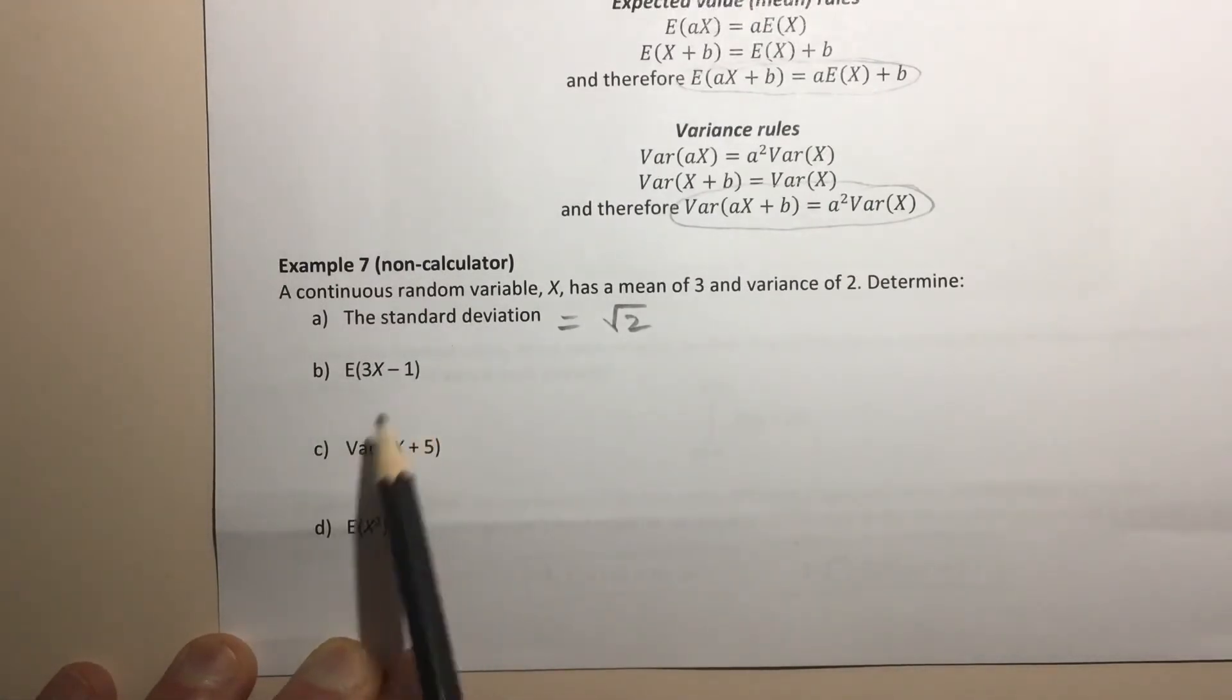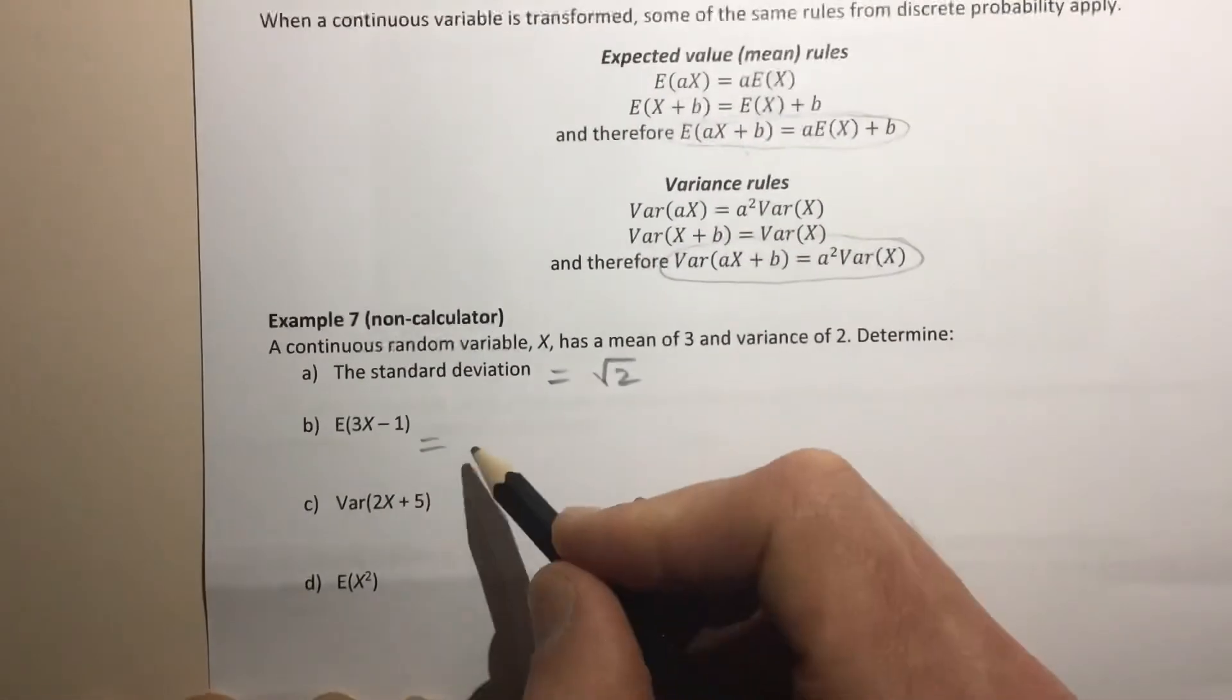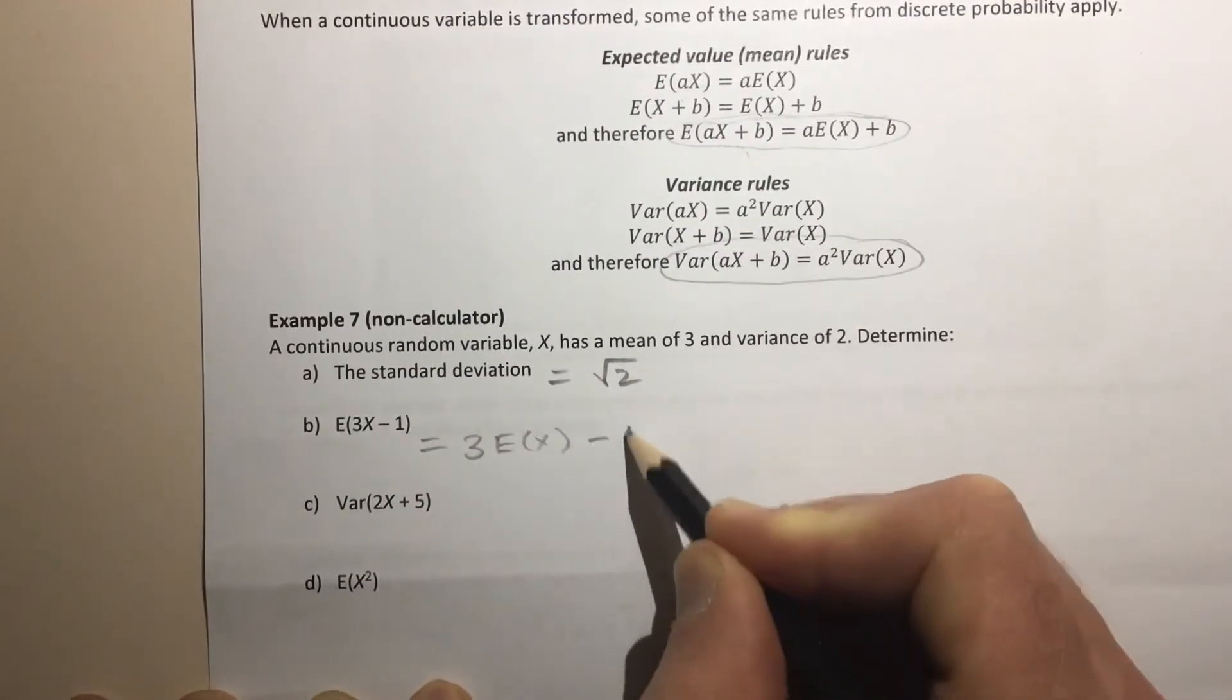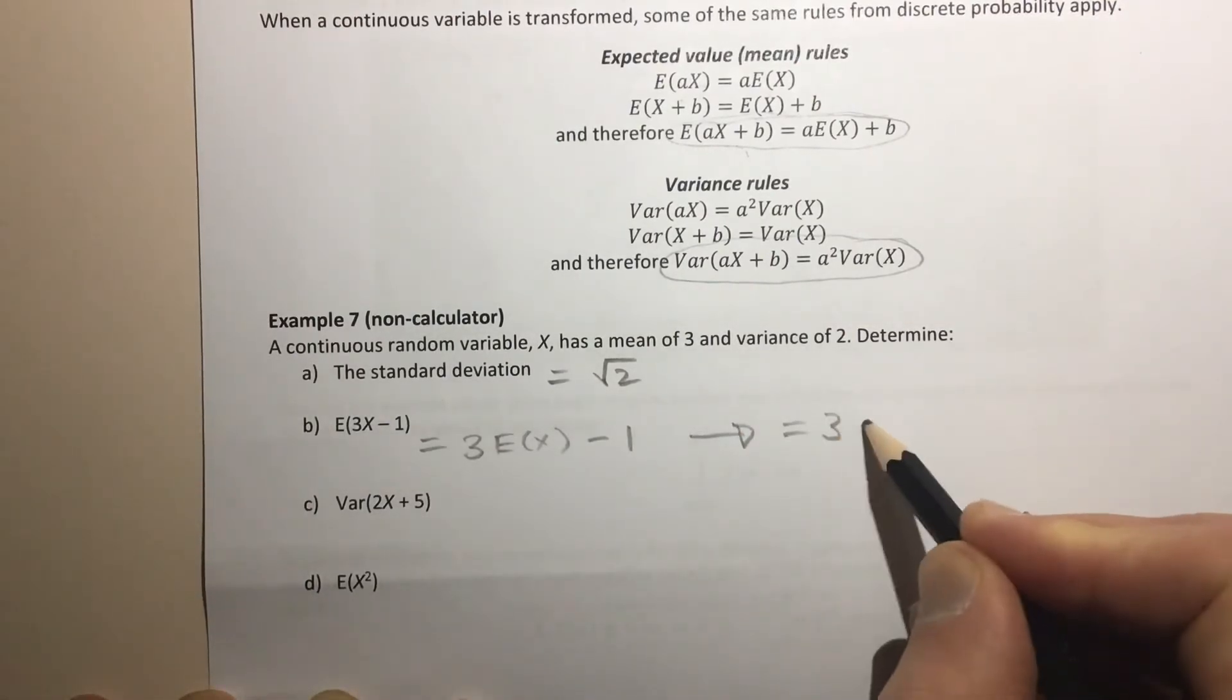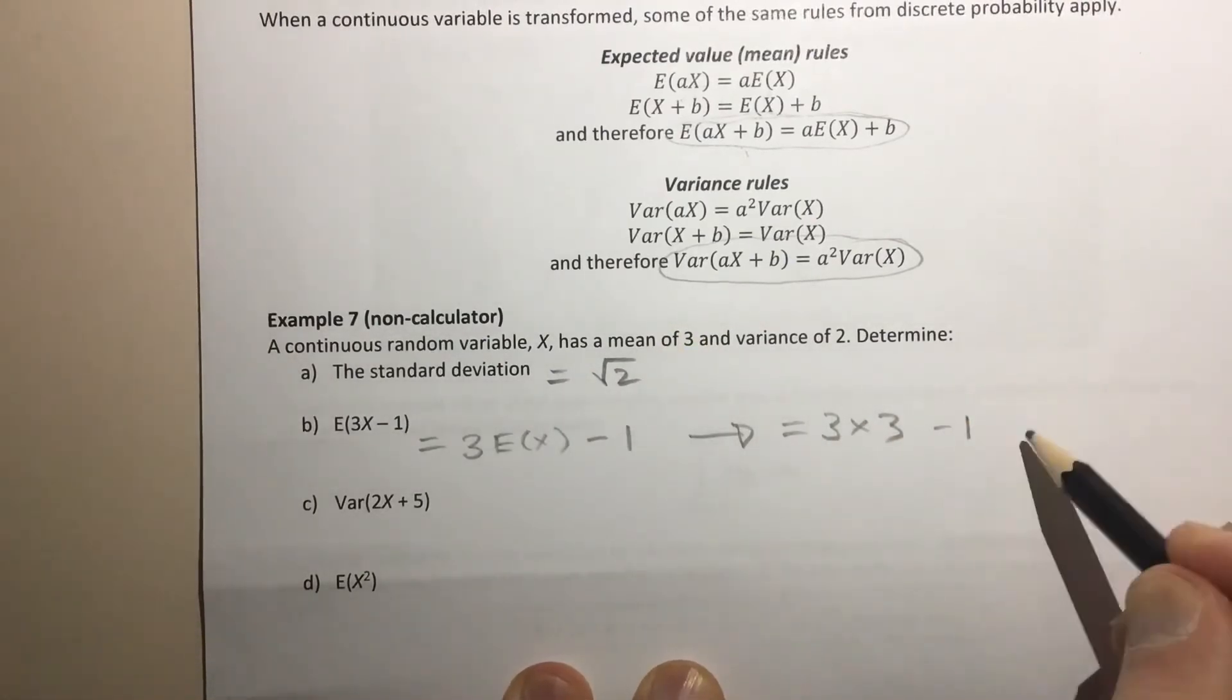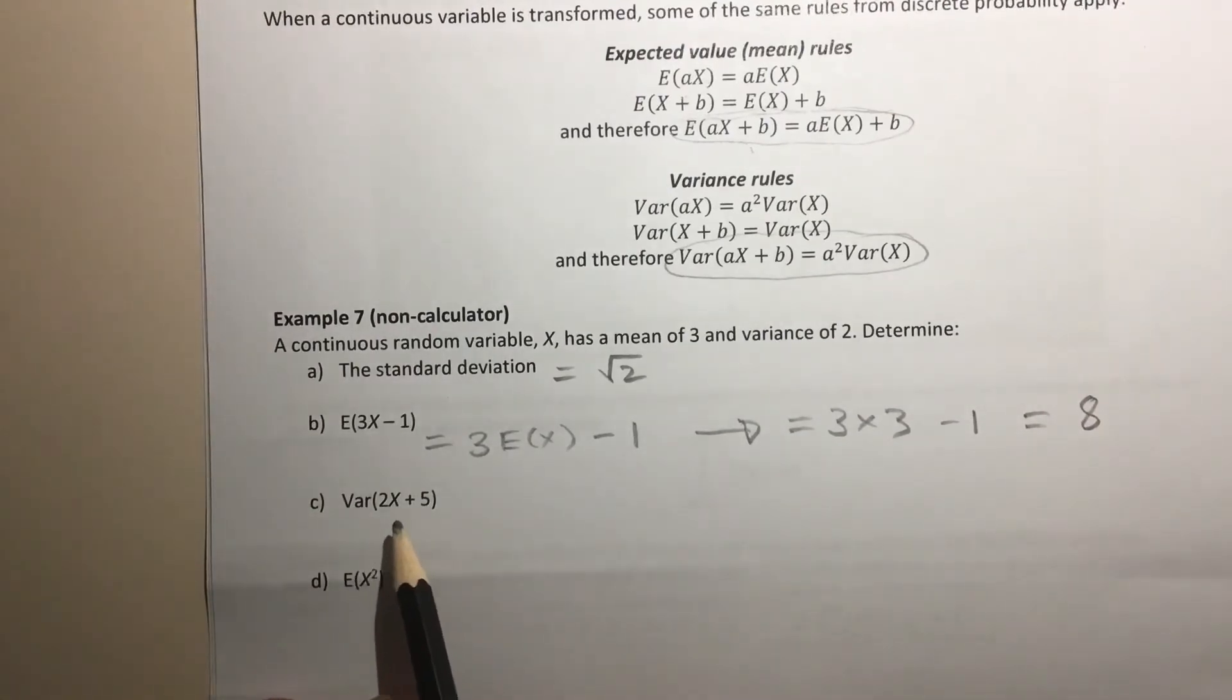This one here, the expected value of 3X - 1, well, we're going to use this formula here and says, this will equal 3·E(X) - 1. And so that will equal 3·3, because the expected value of X was 3, minus 1, which of course is just 9 - 1, which is 8. So that's great.